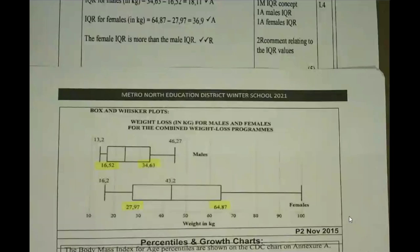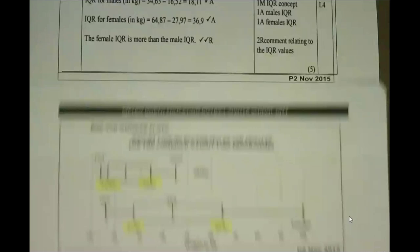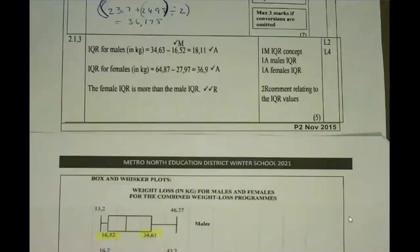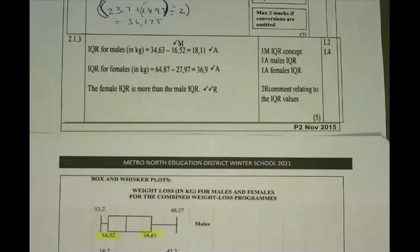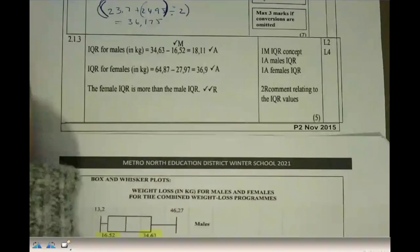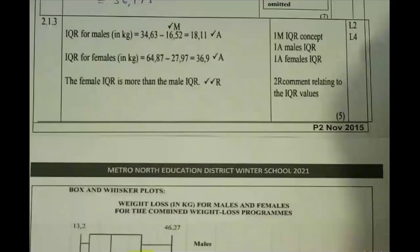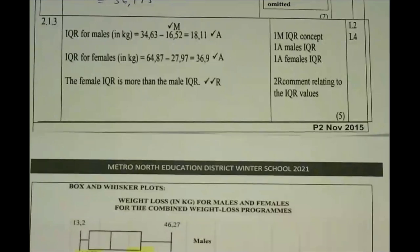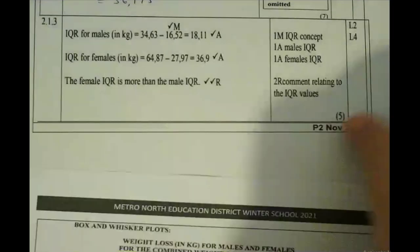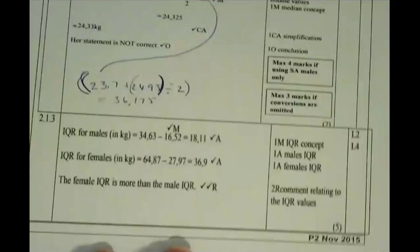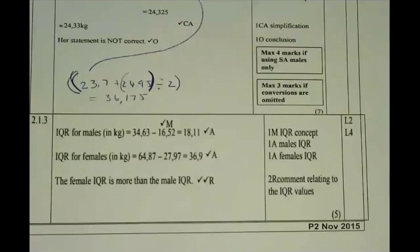A student asks to zoom in and another asks to repeat question 2.1.2 — let's finish this question first then go back. All you're going to do is minus the male and female Q3 and Q1 together. There are the male values and the female values. When you minus Q3 minus Q1 for males and females, the conclusion is that the female interquartile range is more than the male interquartile range.